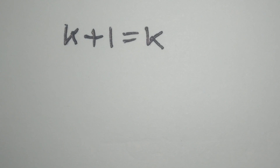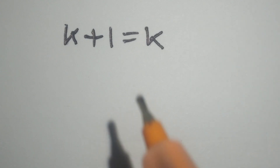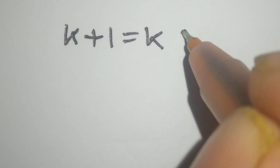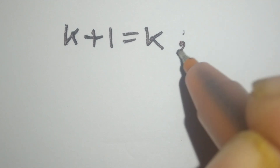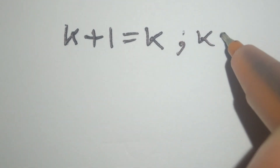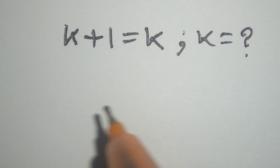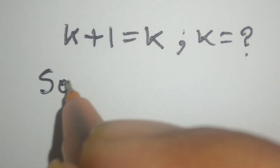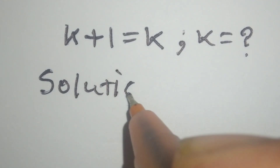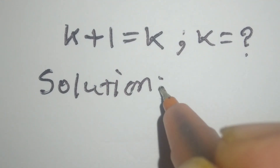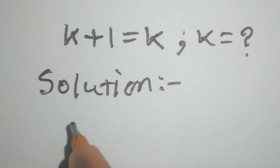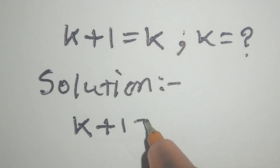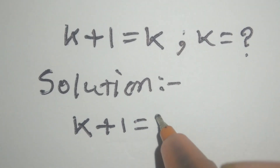Hello, this is a nice math problem. k plus 1 is equal to k. We have to find the value of k. So let's start the solution. k plus 1 is equal to k.